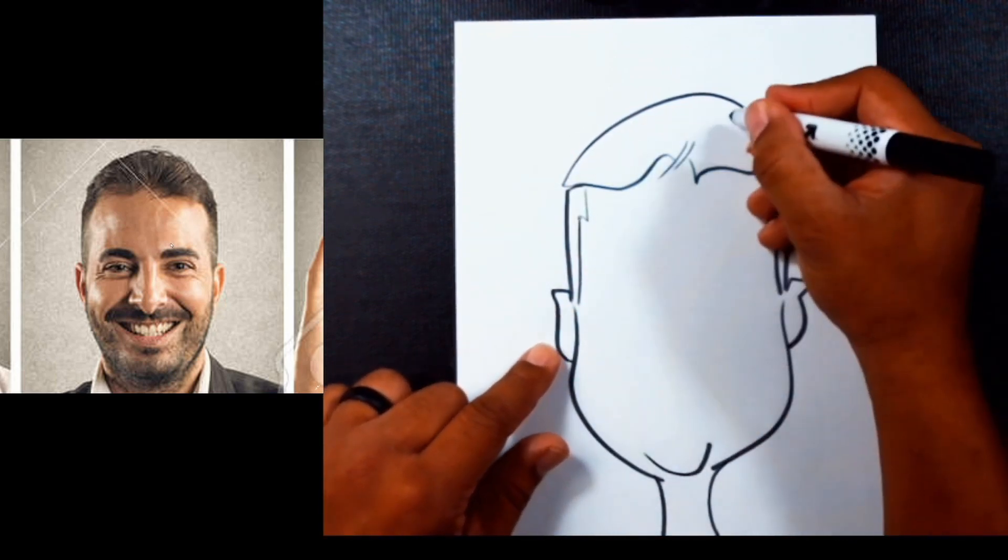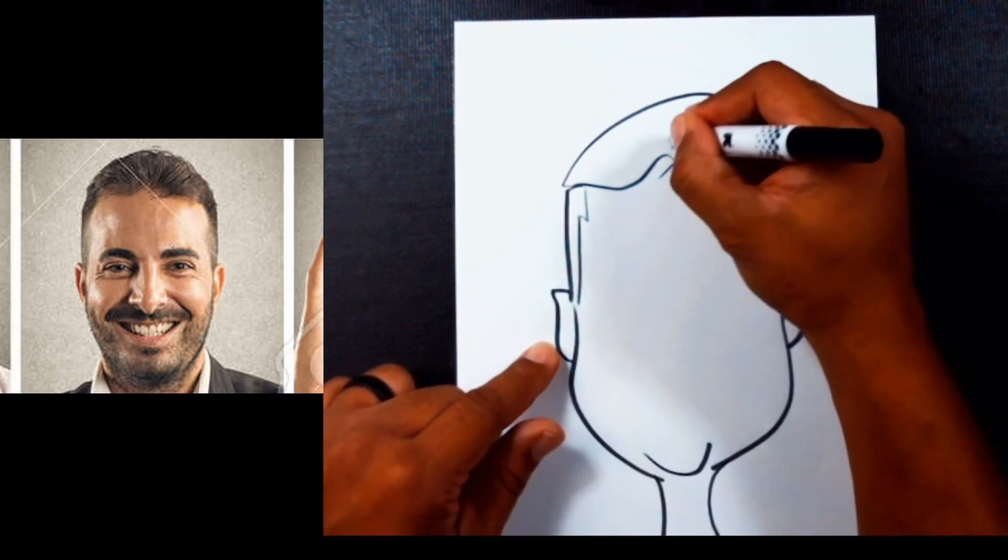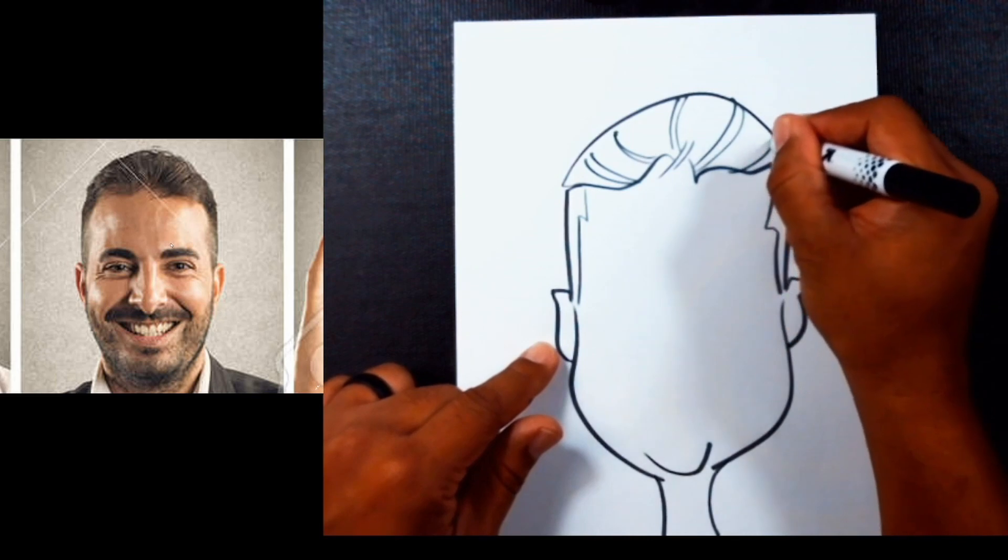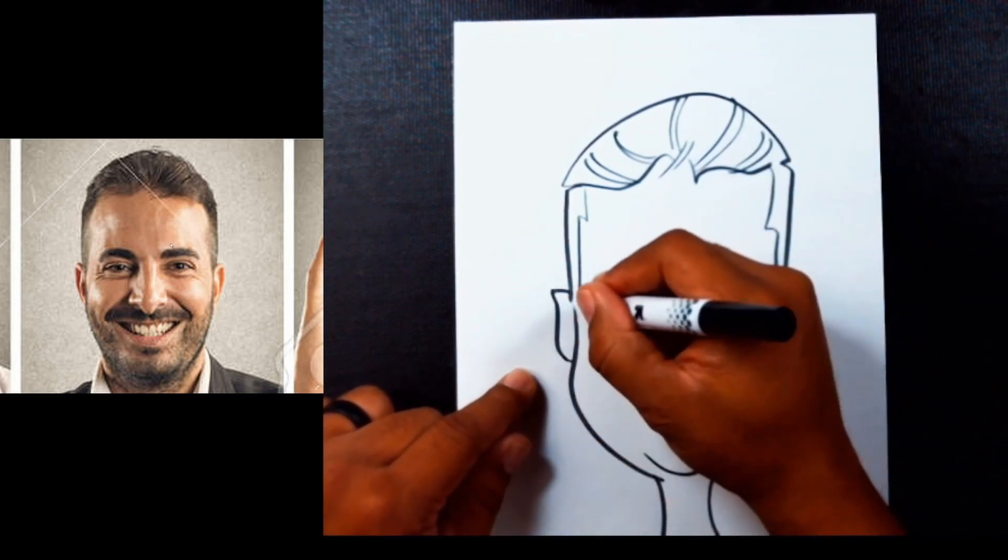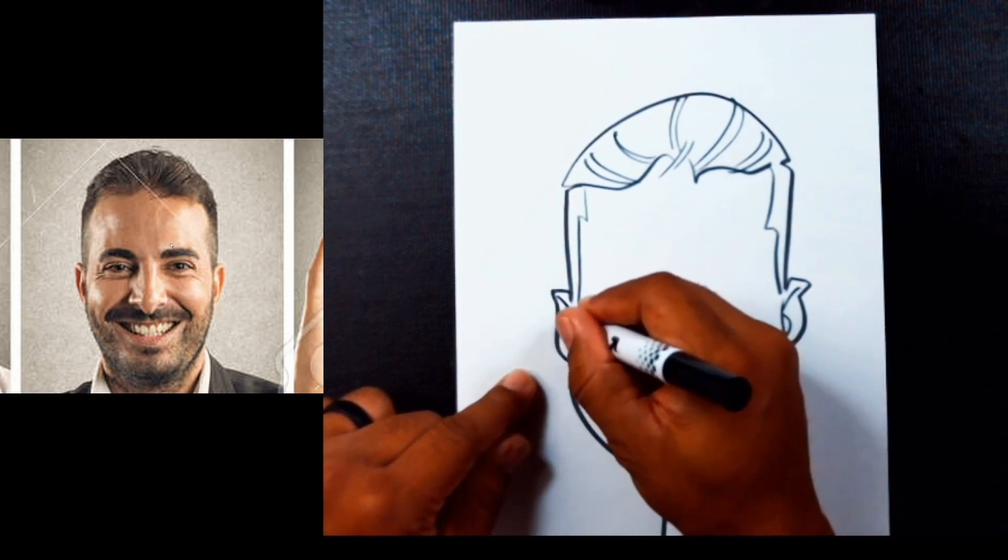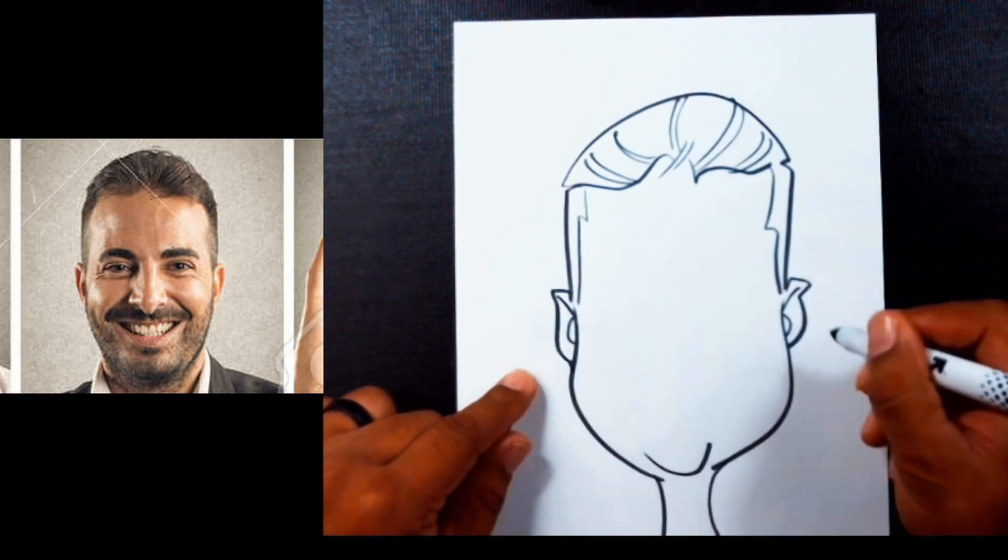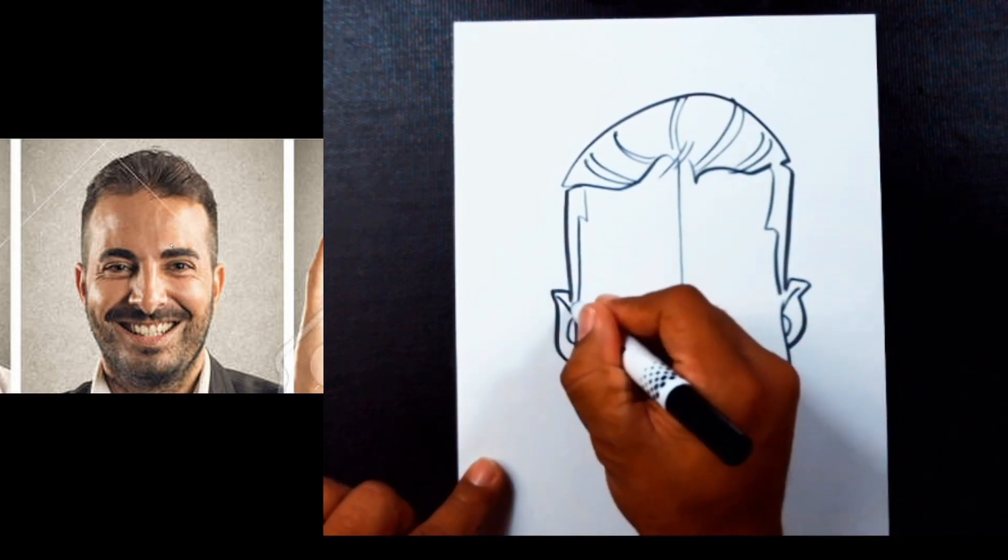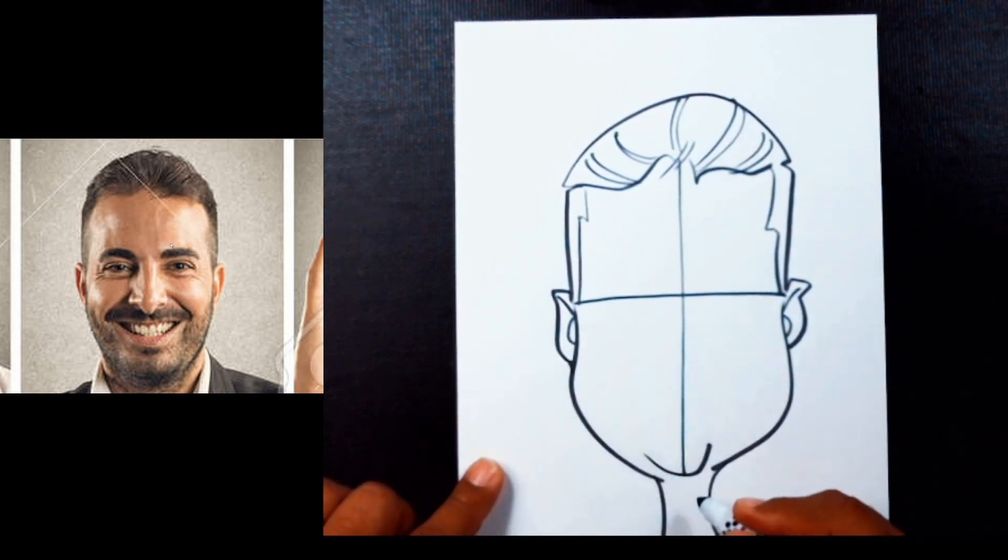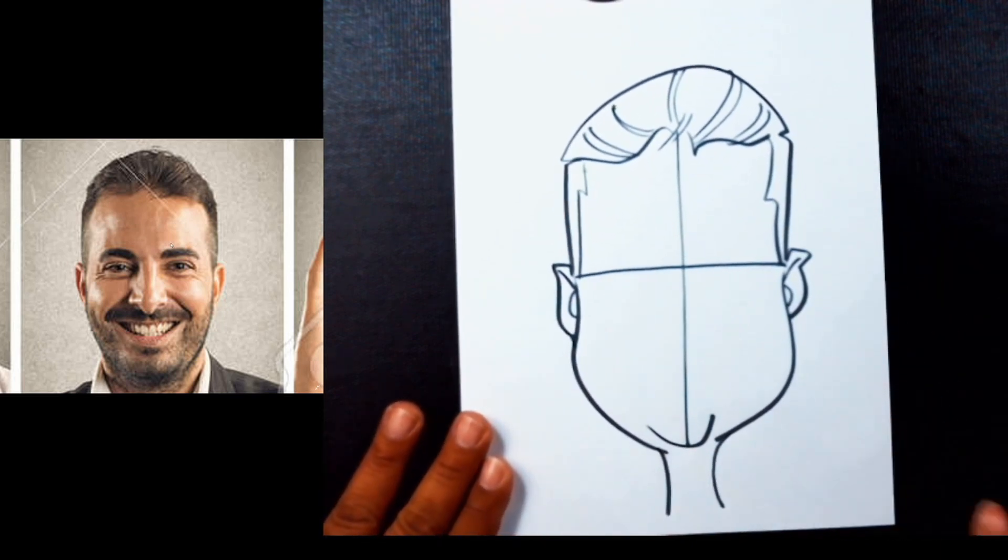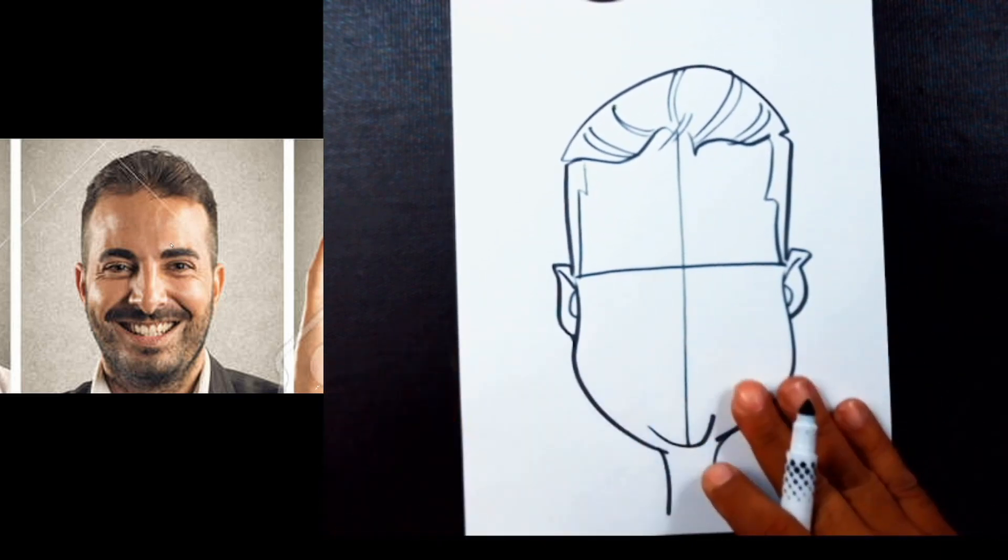You can see the hairline there. We know our eyes go about right here, so I'll do something like this here. Then we'll just go ahead and connect it and we'll just put our little lines like so, and put the little whatnots within the ear.